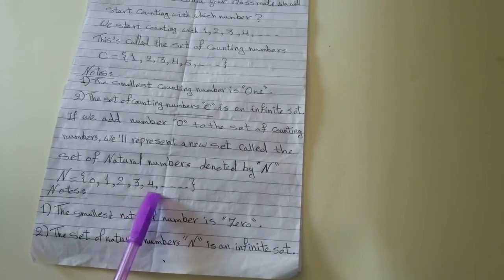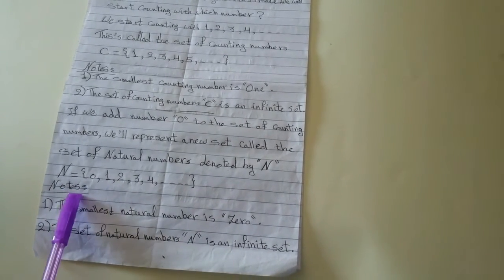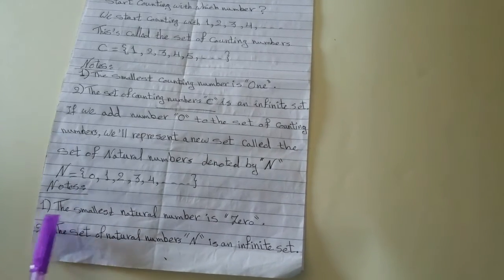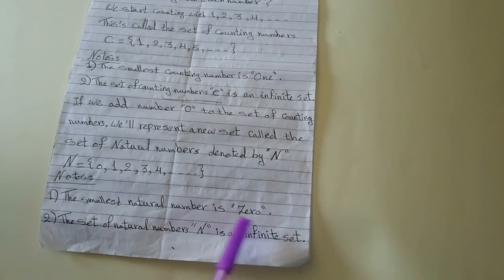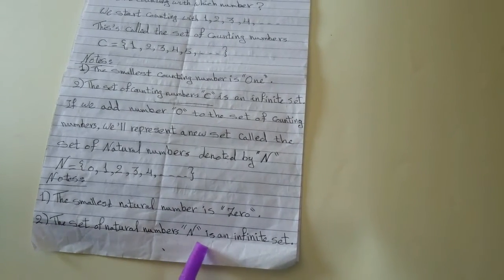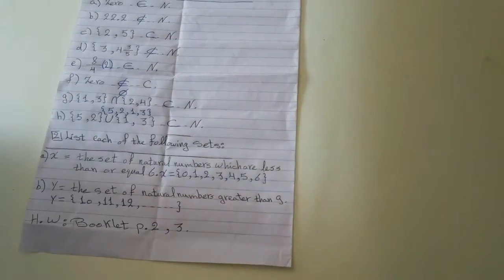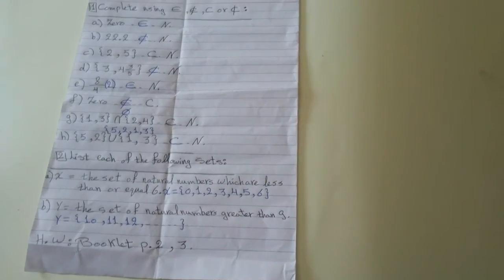The same of counting number, but I add zero at the beginning. And the two notes we have, first, the smallest natural number is zero. Second, the set of natural number is also an infinite set. But let's solve some examples on this lesson.